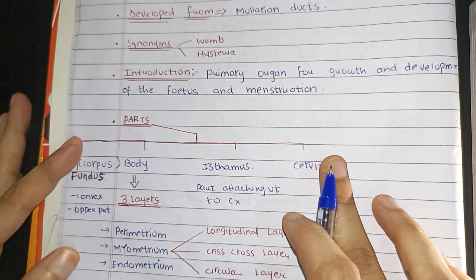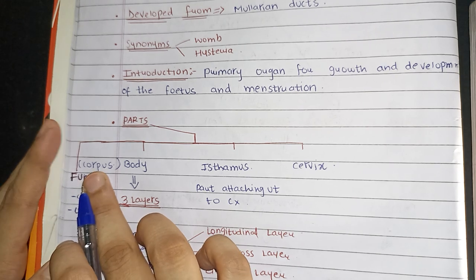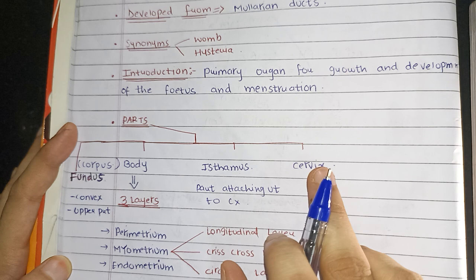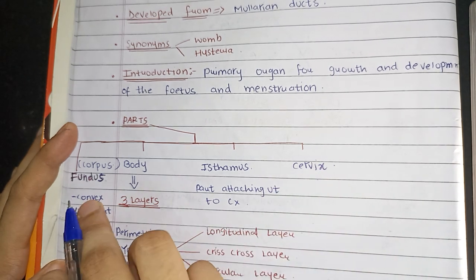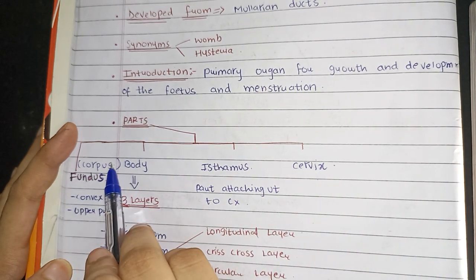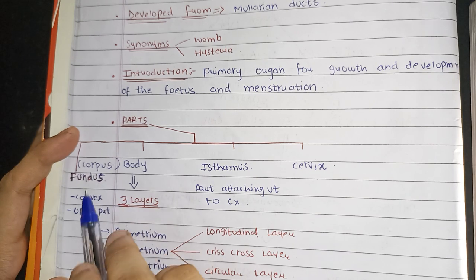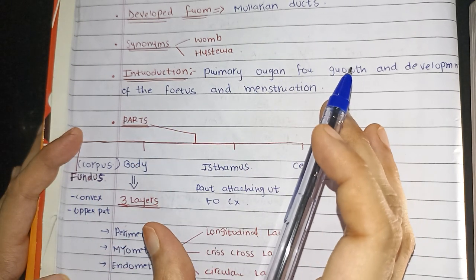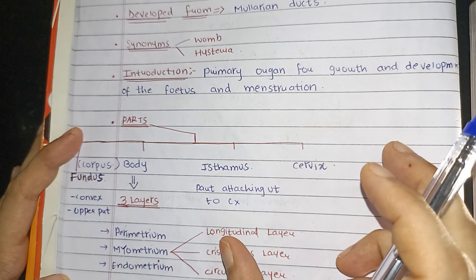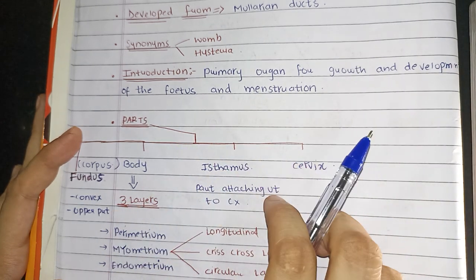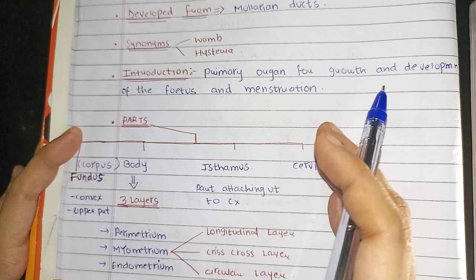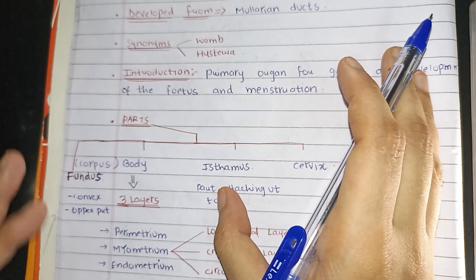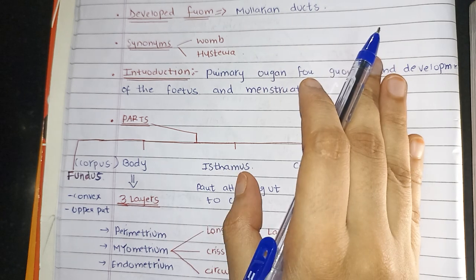Now, the parts of the uterus: the upper one is fundus, middle one is body, the lower one is isthmus, and the last lower one is cervix. Body is also known as corpus. Fundus is the convex, free part of the uterus and the most upper part. It is the part in which implantation takes place, especially in the posterior wall of the fundus.